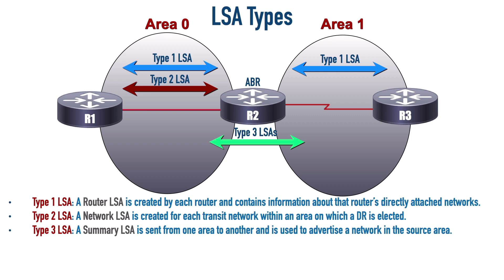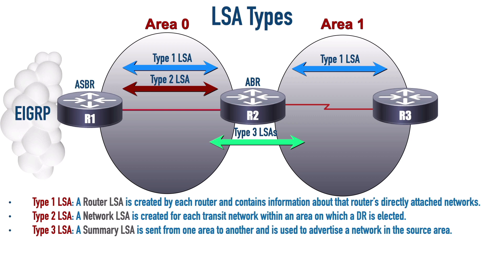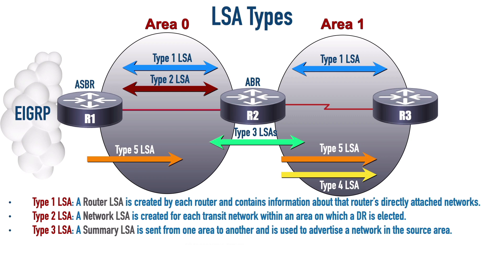Let's say this is the network of a company that merges with another company. This other company, instead of running OSPF, was running EIGRP, and we need to connect into that autonomous system. A router that connects between autonomous systems is called an ASBR, an Autonomous System Boundary Router. We're receiving all these EIGRP networks coming in from the EIGRP cloud, and R1 is going to advertise each of those EIGRP networks with a Type 5 LSA, sending all those Type 5 LSAs into Area 0.